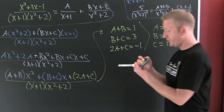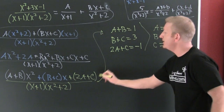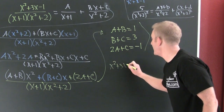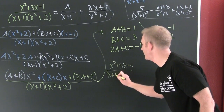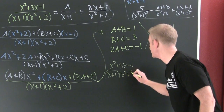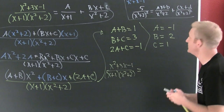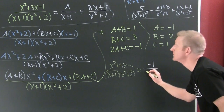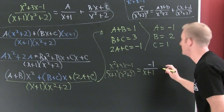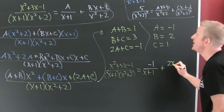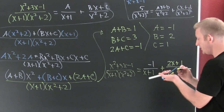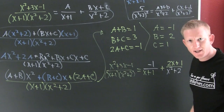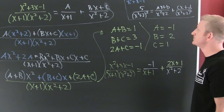So now I can go back to my original. After we solve this system, this fraction is going to be — we can now write it. If we had (X² plus 3X minus 1) divided by (X plus 1)(X² plus 2), that's going to be negative 1 over (X plus 1), plus (2X plus 1) over (X² plus 2). We decomposed that fraction.